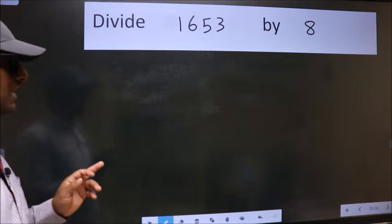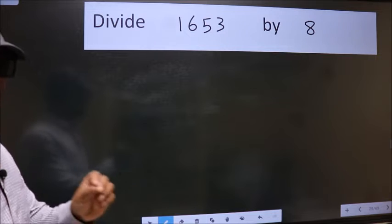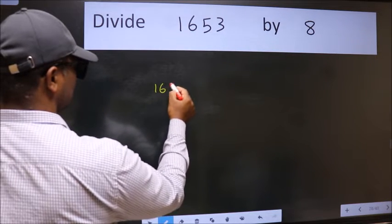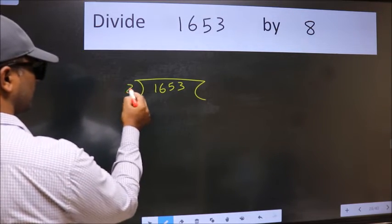Divide 1653 by 8. To do this division, we should frame it in this way: 1653 here, 8 here.